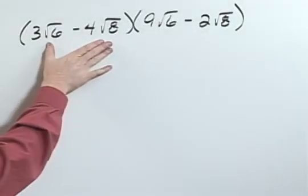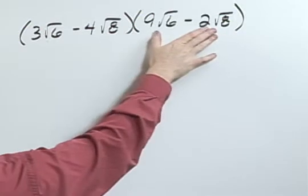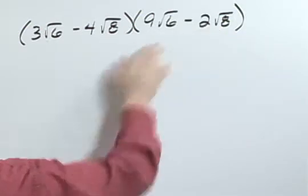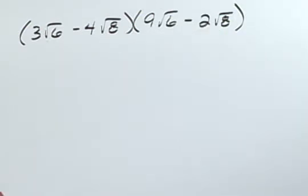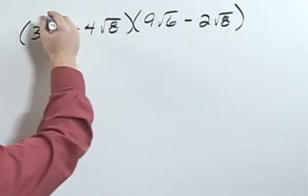The quantity 3 square root of 6 minus 4 square root of 8, times the quantity 9 square root of 6 minus 2 square root of 8. I can think about this as a binomial times a binomial that I could FOIL out.